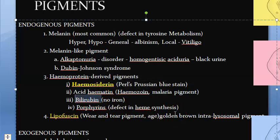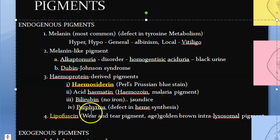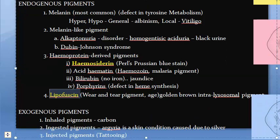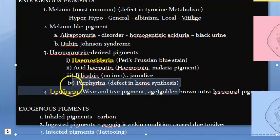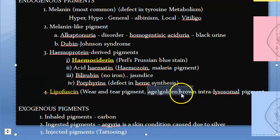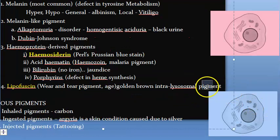Then you have bilirubin, which is a breakdown product of heme. When there is excess bilirubin, jaundice occurs. Then you have porphyrins — if there is a problem in heme synthesis, porphyrins accumulate. Lipofuscin is the wear-and-tear pigment that comes with age. It is golden brown and is an intralysosomal pigment — it is found inside the lysosomes.